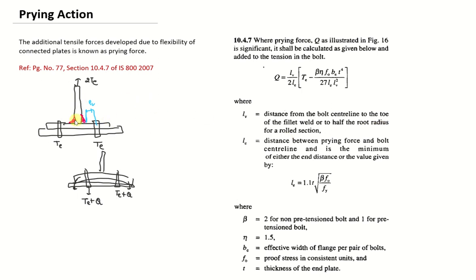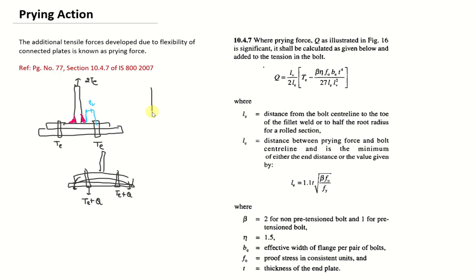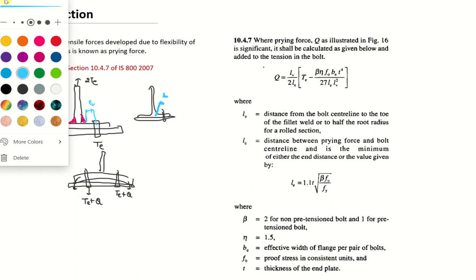And also it is mentioned half root radius of the rolled section. So for example this T section is a rolled section. So that will be having a radius. Plates are connected like this. So this is the bolt. So this will be having the radius. Now the LV will be half of the radius distance to the center of the bolt.